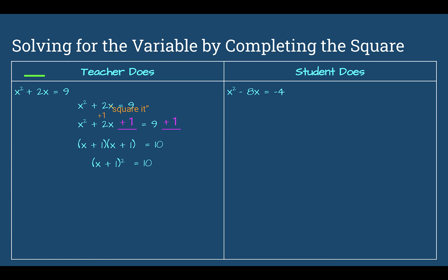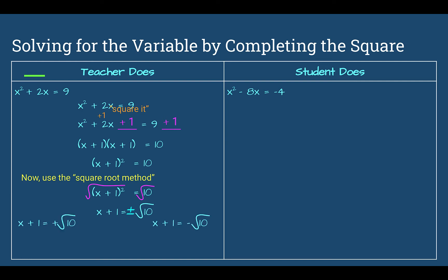Now let's finish completing the square. We use the square root method: take the square root of both sides, leaving what's in the parentheses equal to the square root of that number. Don't forget — when you take the square root of a number, you get both a positive and negative result.